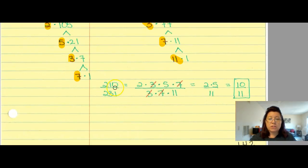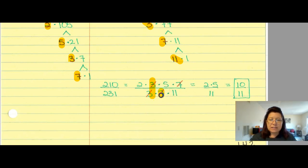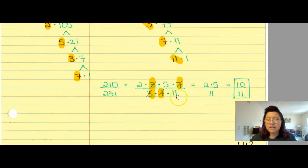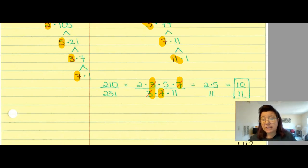I'll rewrite 210 in terms of its prime components: 2 times 3 times 5 times 7, and 231 as 3 times 7 times 11. Whatever is in both the numerator and denominator makes a big fat 1 and can be eliminated. 3 on top and 3 on bottom make 1; 7 on bottom and 7 on top make 1. I'm left with 2 times 5 on top and 11 on the bottom. Doing that last multiplication: 210 over 231 reduces to 10 over 11. I needed to break it down into primes first to see that.